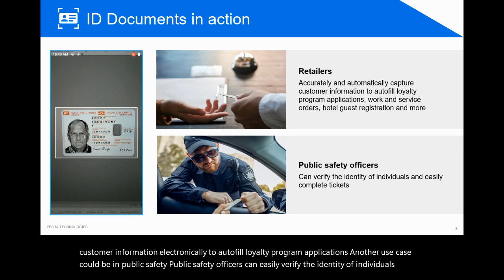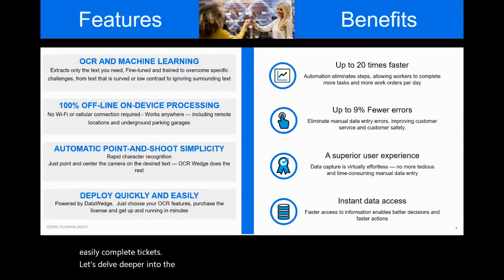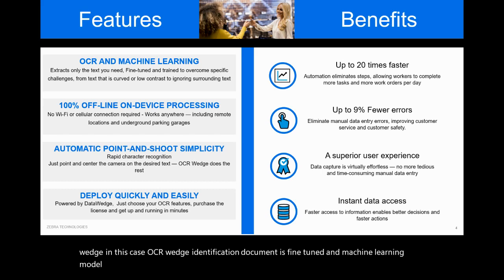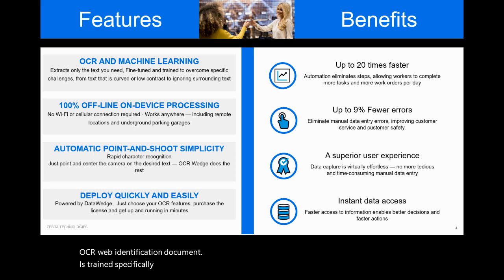Now let's delve deeper into the solution and see what's under the hood. Each offering of OCR Wedge — in this case OCR Wedge Identification Document — is fine-tuned and the machine learning model is trained for specific use cases. In essence, the machine learning model empowering OCR Wedge Identification Document is trained specifically to read identification documents only. It's a specific solution.